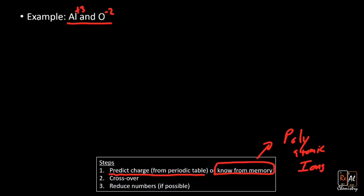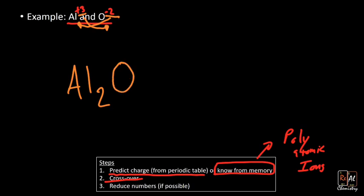We want to figure out how many aluminums and how many oxygens we need to make them balance out. I'm going to use a trick called crossing over. That means our aluminum charge becomes the number of oxygens, and our oxygen charge becomes the number of aluminums. So aluminum gets two (from the oxygen charge of 2) and oxygen gets three (from the aluminum charge of 3).